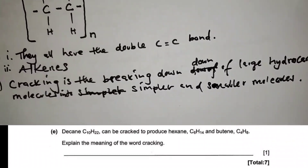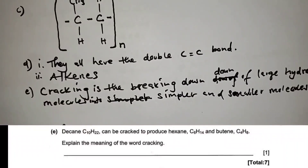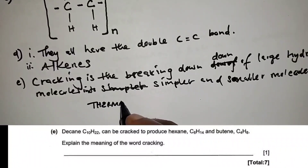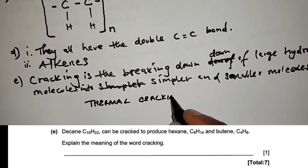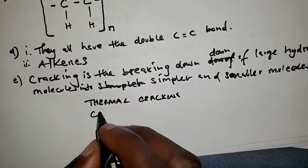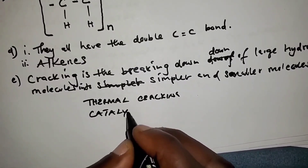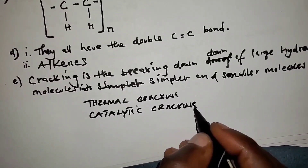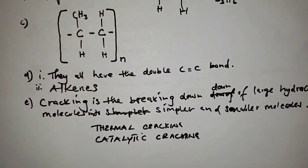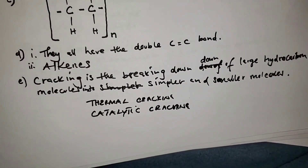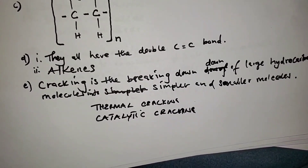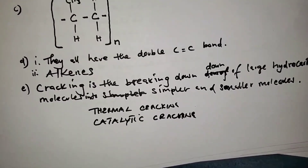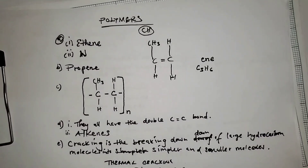As additional information, there are two types of cracking: thermal cracking, where you use heat, and catalytic cracking, where you use a catalyst. Those are the answers to this question. Let's look at another organic chemistry examination question.